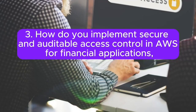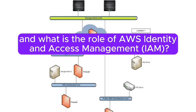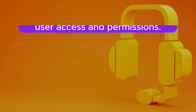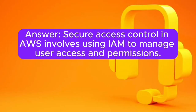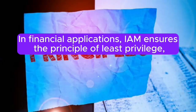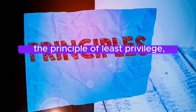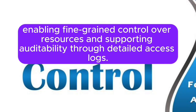Question 3: How do you implement secure and auditable access control in AWS for financial applications, and what is the role of AWS Identity and Access Management (IAM)? Answer: Secure access control in AWS involves using IAM to manage user access and permissions. In financial applications, IAM ensures the principle of least privilege, enabling fine-grained control over resources and supporting auditability through detailed access logs.